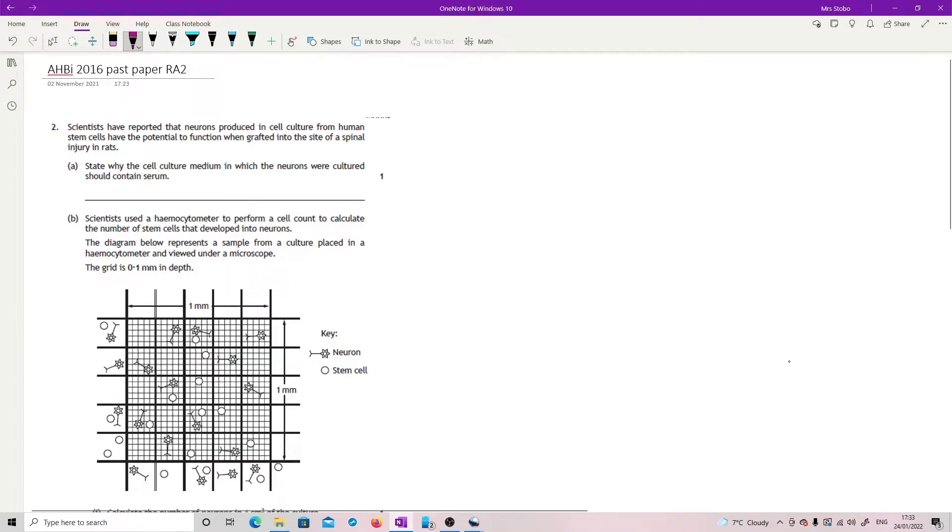2016 paper, it's question 2. Scientists have reported that neurons produced in cell culture from human stem cells have the potential to function and be grafted into the site of a spinal injury in rats.